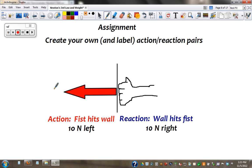Okay. This is your assignment. I would like you to create and label your own action-reaction pairs. It needs to include a picture, a description of the action and the reaction, magnitude, and direction. So we have the magnitude and the direction.